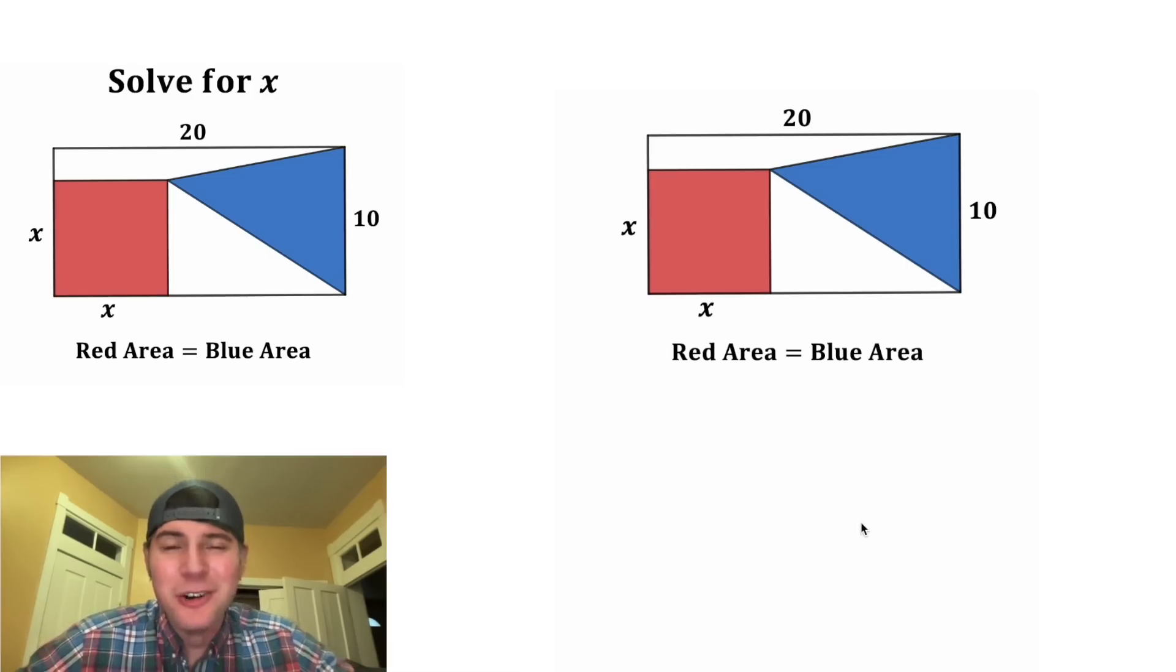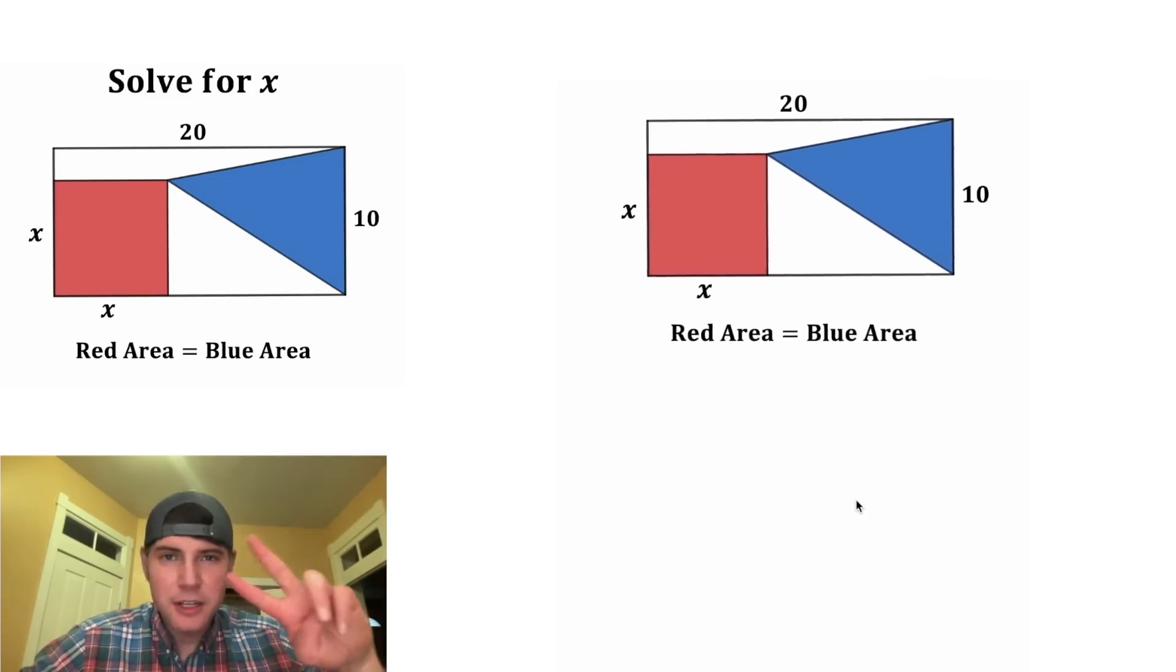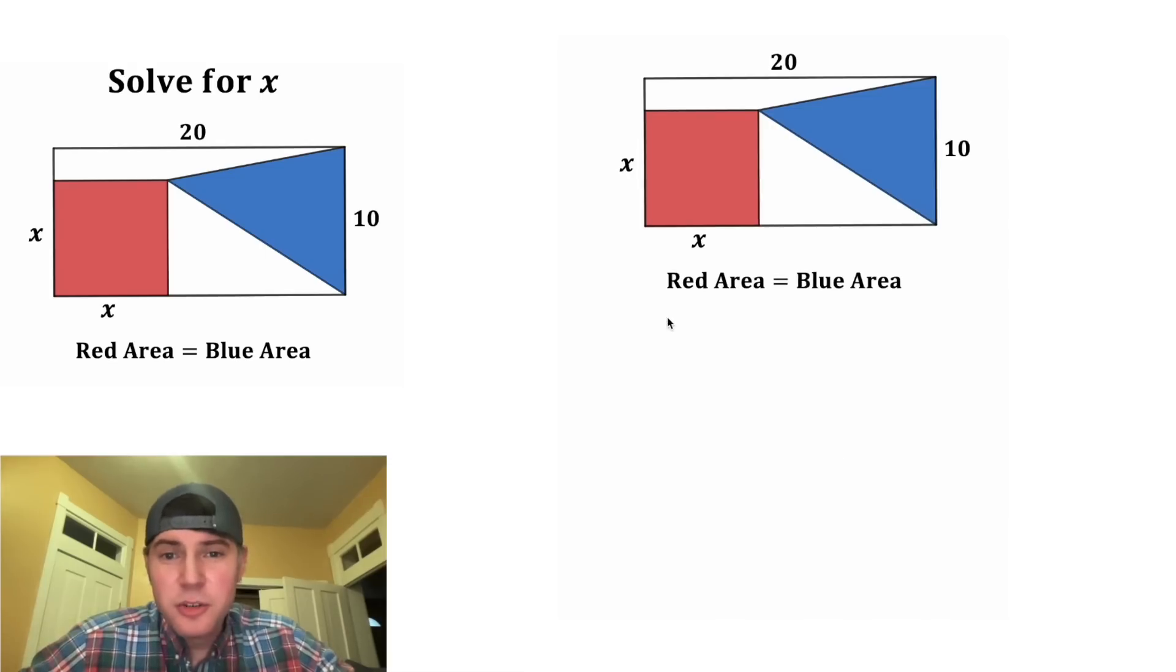If you guys want to solve this on your own, pause it right now, because I'm gonna solve it in three, two, one. So let's use this red area equals blue area. Well, the red area is a square, so the area is gonna be x squared. And this blue area is a triangle, so it's gonna be one half base times height.